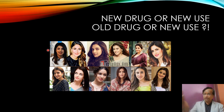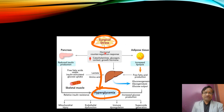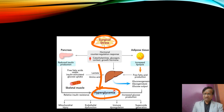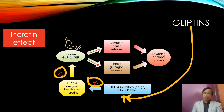In a surgical setting, surgery is a stress. There are counter-regulation mechanisms: steroid increase, catecholamine increase, glucagon increase, growth hormone increase — all of these are going on. Anesthesia adds to this and causes further increases in these stress hormones. Now we go to the first group of drugs — the Gliptins.